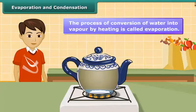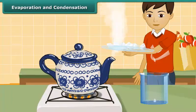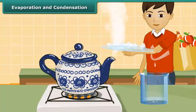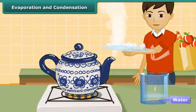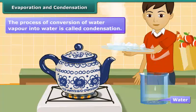In order to obtain the water while heating the salt water, hold a plate containing ice just above the spout of the kettle. When the steam escaping through the spout comes in contact with the plate containing ice, it condenses and forms water. This process gives us back the water. This process of conversion of water vapor into water is called condensation.